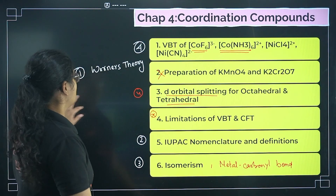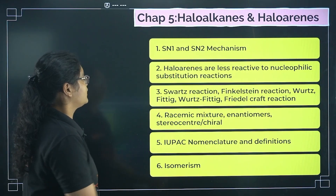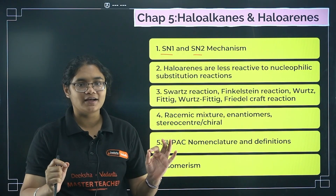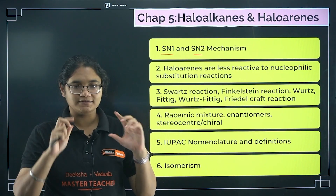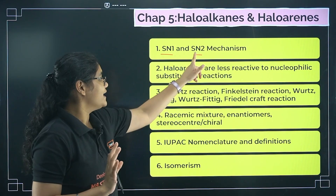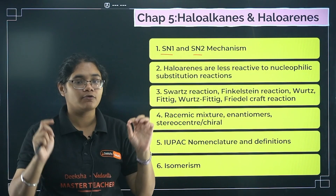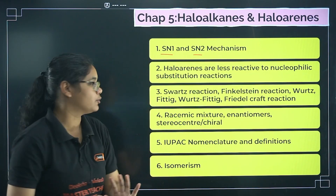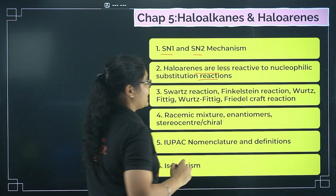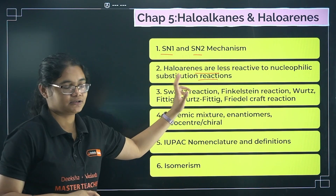Moving to Haloalkanes and Haloarenes: SN1 and SN2 mechanisms are very very important — a five-marker question will definitely be asked. For SN1, know the two steps and how to draw the arrows. For SN2, know the steps, how it's written, and the transition state. Also prepare: why haloarenes are less reactive than haloalkanes — three reasons, directly a three-marker question.